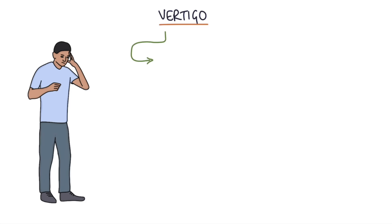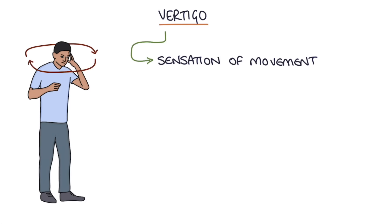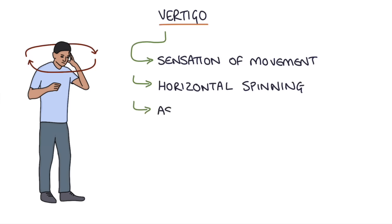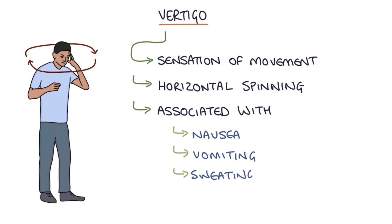Vertigo is a descriptive term for a sensation that there's movement between the patient and their environment. They may describe that they're moving or that the room is moving, and often this is a horizontal spinning sensation, similar to the sensation you'd get when spinning on a swing and then abruptly stopping and the environment continues to feel like it's moving around you. Vertigo is often associated with nausea, vomiting, sweating and generally feeling unwell.